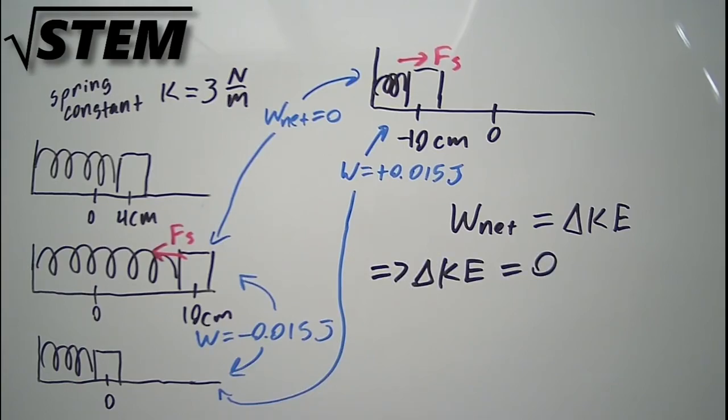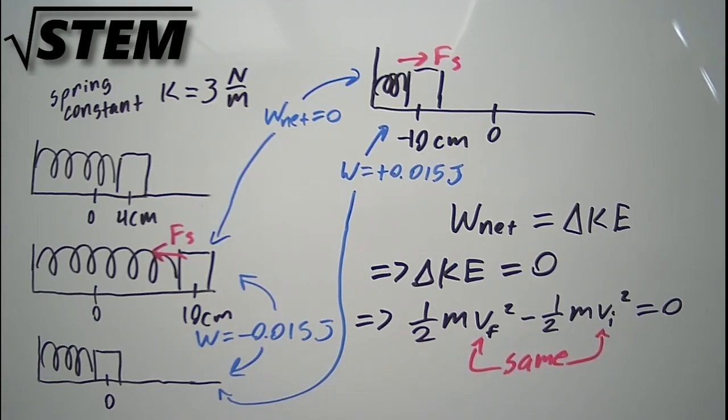That is, whatever velocity it had at plus 10 centimeters, it had the same velocity at minus 10 centimeters. Since we released the block from rest at x equals plus 10 centimeters, that means it once again has zero velocity once it reaches x equals minus 10 centimeters, until the spring pulls it back towards the center again.